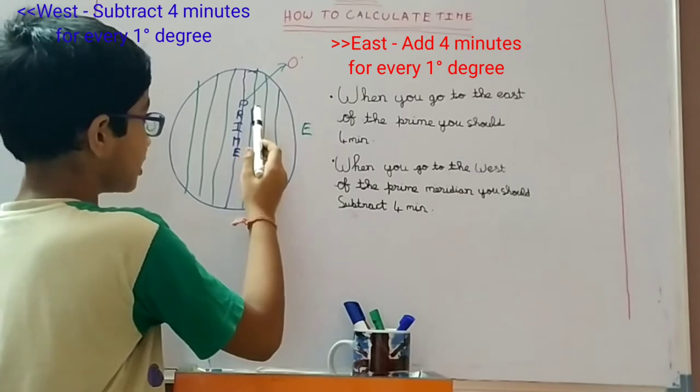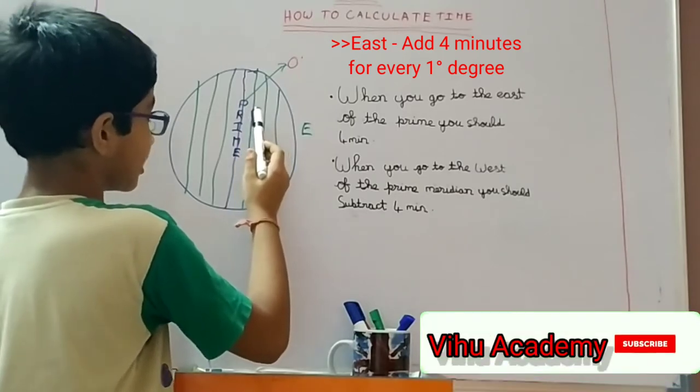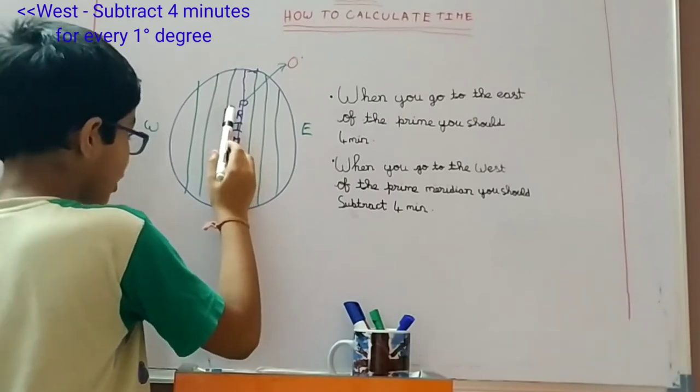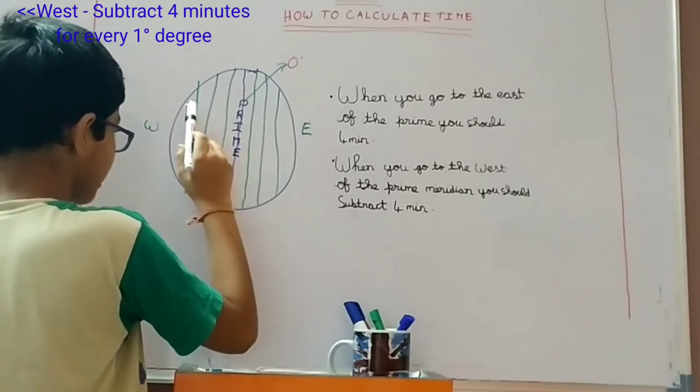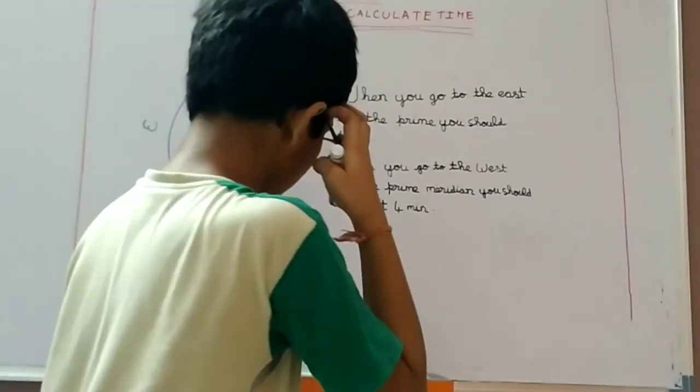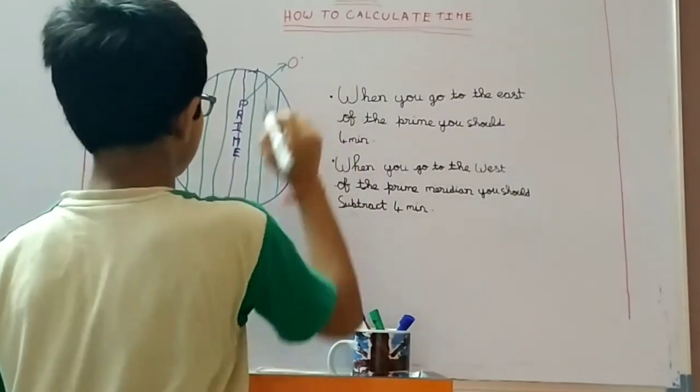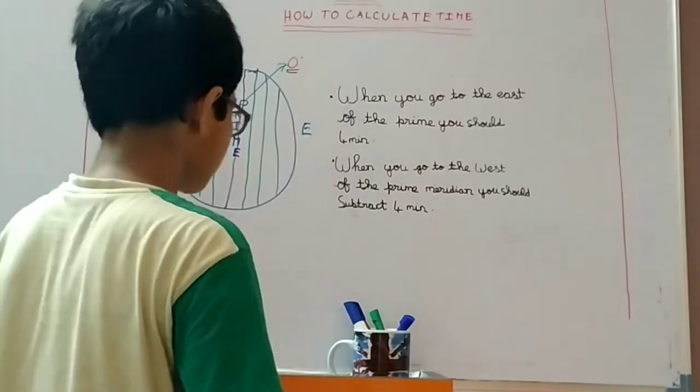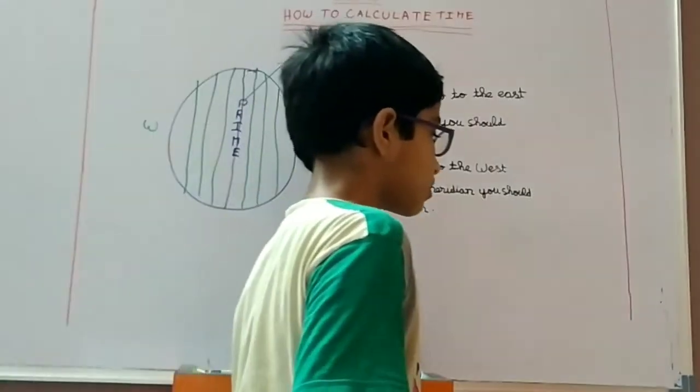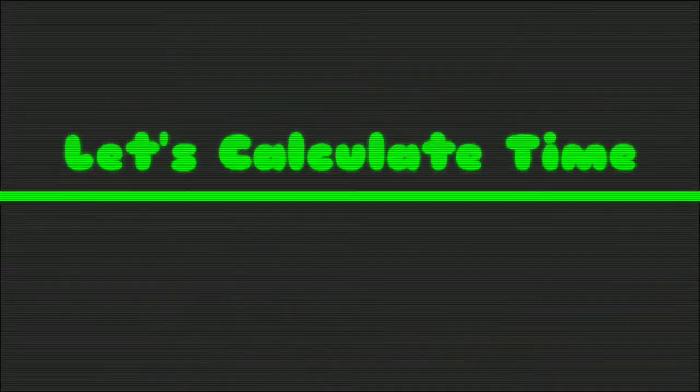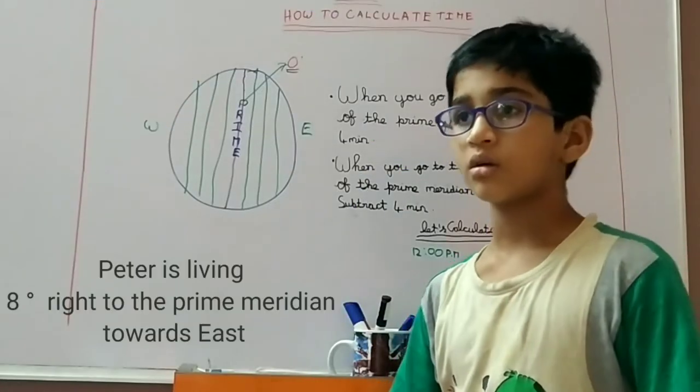One degree, one degree east, two degrees east, three degrees and so on. It is zero degrees. So now let's start calculating time.